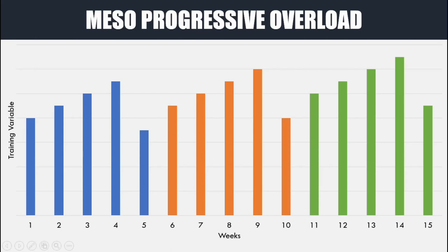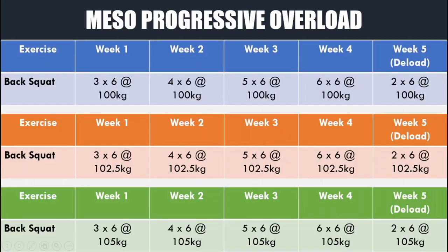Once we've gone through a mesocycle of progressive overload and completed a deload, how do we continue to apply progressive overload from mesocycle to mesocycle? It may look something like this: in the first mesocycle we have four overloading weeks and one deloading week, and in the next mesocycle we have the same structure but it's a little bit harder than the last block — we reach a peak slightly higher than last time. We deload, then increase again, creating what almost looks like a waving pattern that is actually getting harder over time.